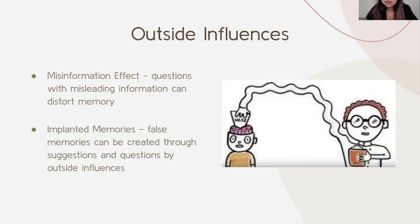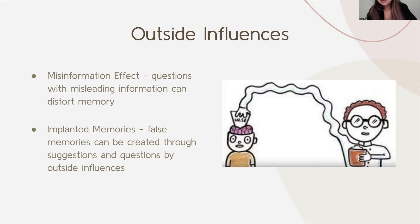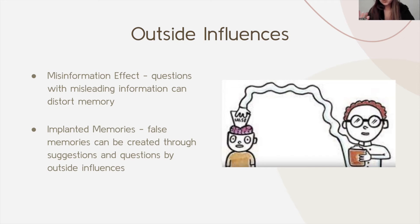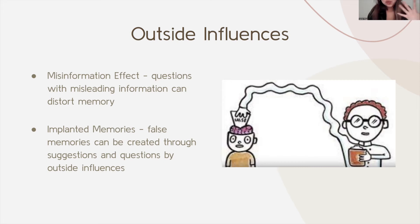Regarding outside influences: the misinformation effect means that questions with misleading information can distort memory. For implanted memories, false memories can be created through suggestions and questions by outside influences. This means that if someone like police is questioning a witness, if they are not careful with how they word things, or if their questions imply a certain direction, that can make it more likely for the witness to plant false memories in their own mind.